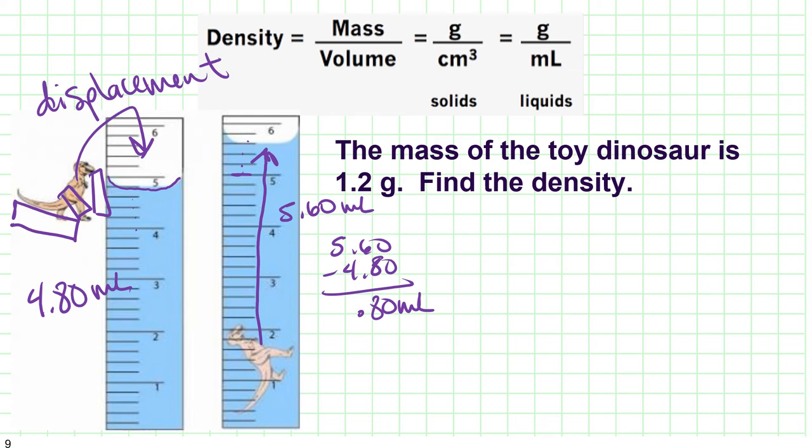Now I can finally do my mass over volume. The mass is 1.2 grams. My volume is 0.80 milliliters. And so the density of the dinosaur toy is 1.5 grams per milliliters. Quick sig fig check.